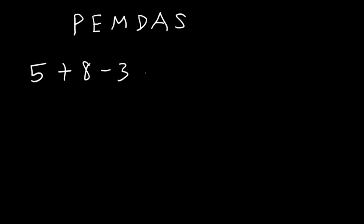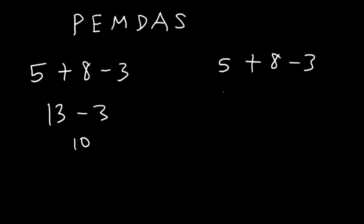Addition and subtraction have about the same priority. For example, let's simplify 5 plus 8 minus 3. We can add first: 5 plus 8 is 13, and 13 minus 3 is 10. If we subtract first: 8 minus 3 is 5, and 5 plus 5 is 10. We get the same answer, so for addition and subtraction the order doesn't matter.